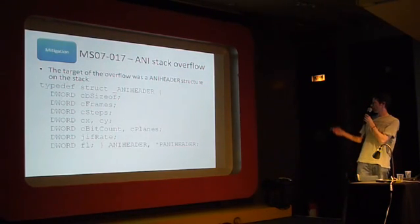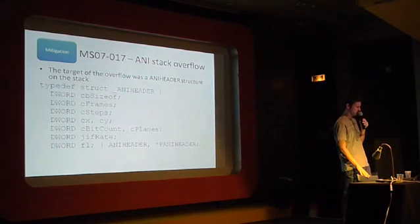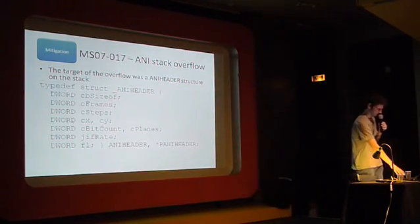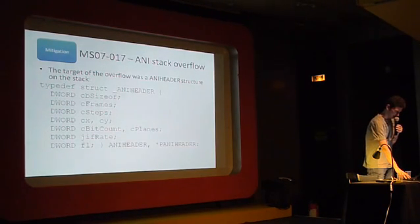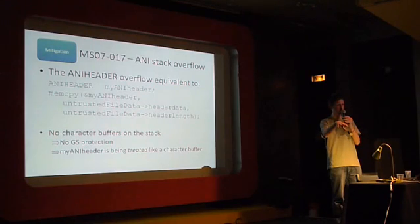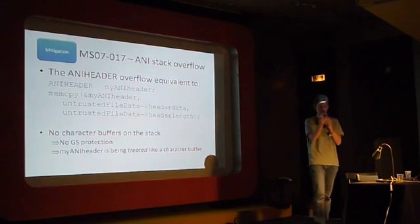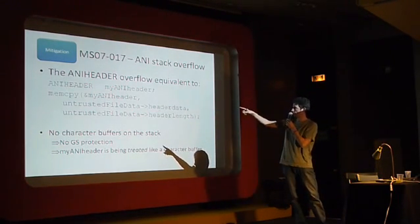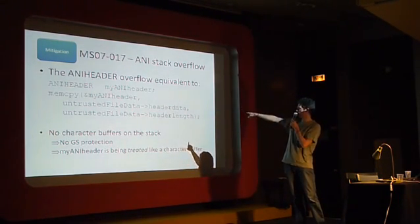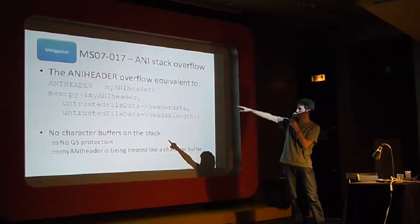The thing that got overflowed in the ANI case was a structure that had a whole bunch of DWORDs, a whole bunch of integers. What happened is the file would get read in, there would be a field in the file that had some untrusted length that the attacker could supply, and there would be a memcpy from that, using that untrusted header length, and it would just get copied into that structure.